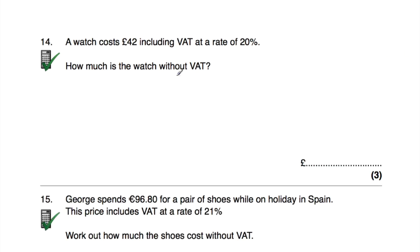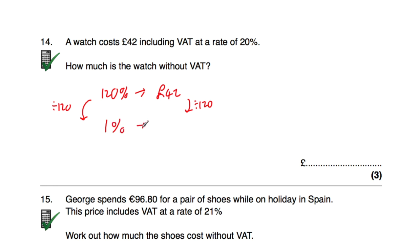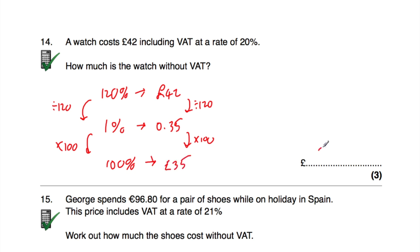Question fourteen: a watch costs £42 including VAT at 20%. How much is the watch without VAT? The pre-VAT price is 100%, so with 20% VAT that's 120% = £42. Dividing by 120: 1% = £0.35. Multiplying by 100: 100% = £35. The watch costs £35 without VAT. Alternatively, £42 divided by the multiplier 1.2 = £35.